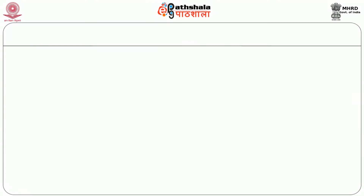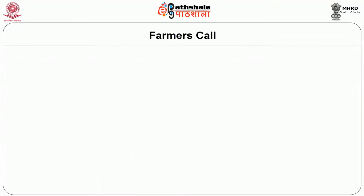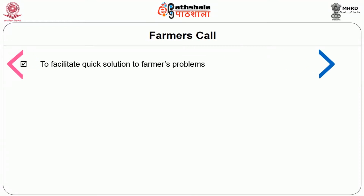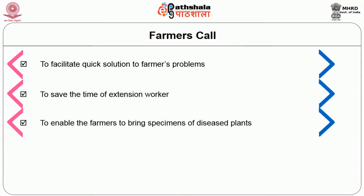The next individual contact method is the farmers call — a call made by a farmer or a farmers group on the extension worker at his office to get information or other help needed, or to make acquaintance. The objectives are: to facilitate quick solutions to farmers' problems; to save the time of the extension worker; and to enable farmers to bring specimens of diseased plants or insect pests so that the extension worker can identify them and give necessary advice.